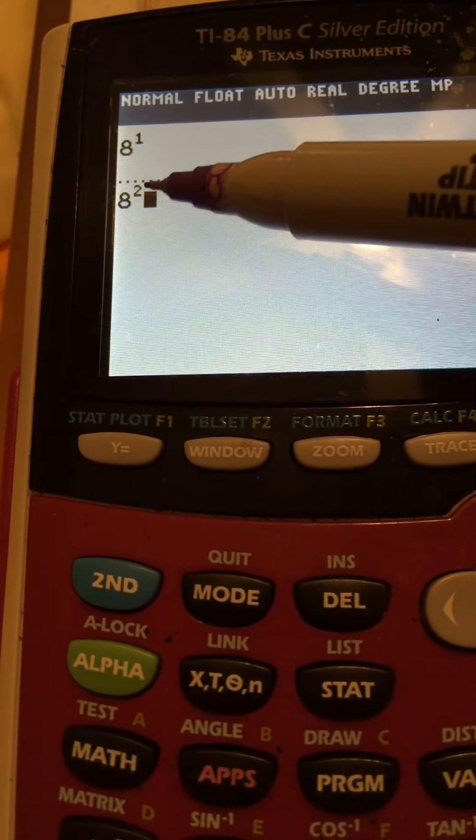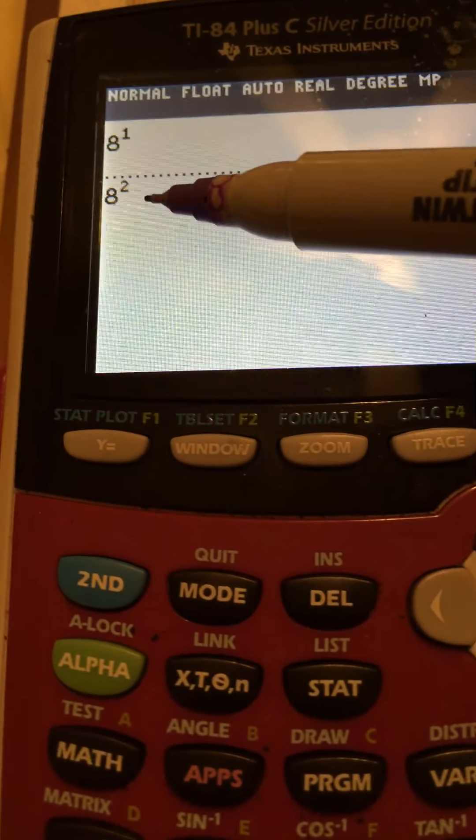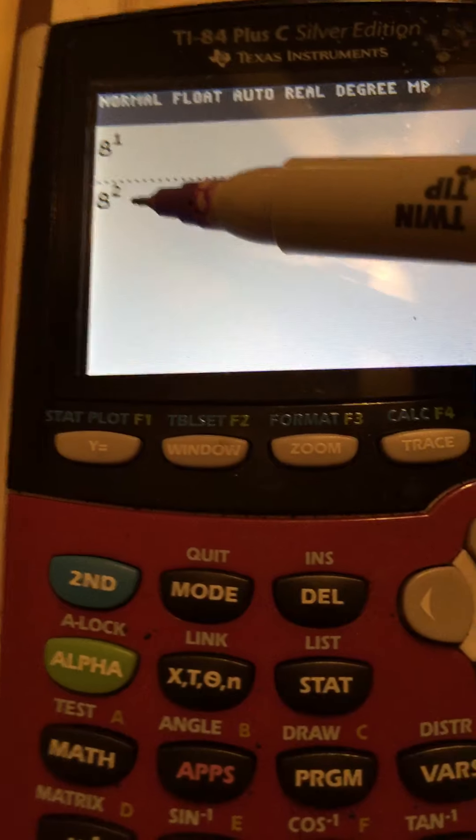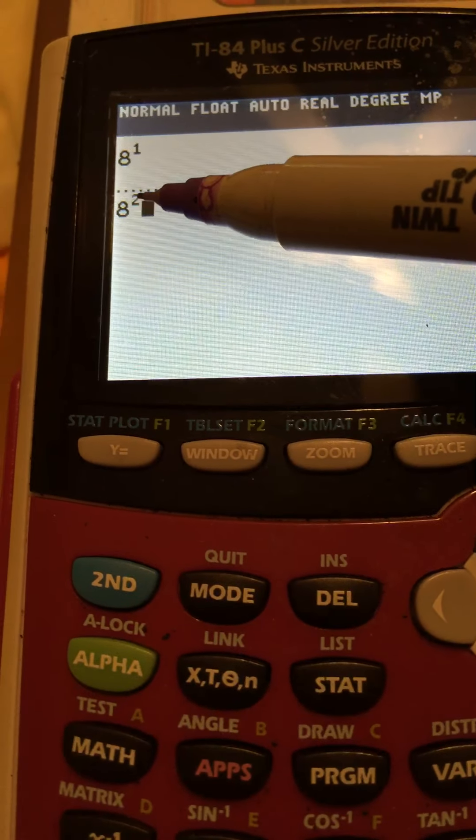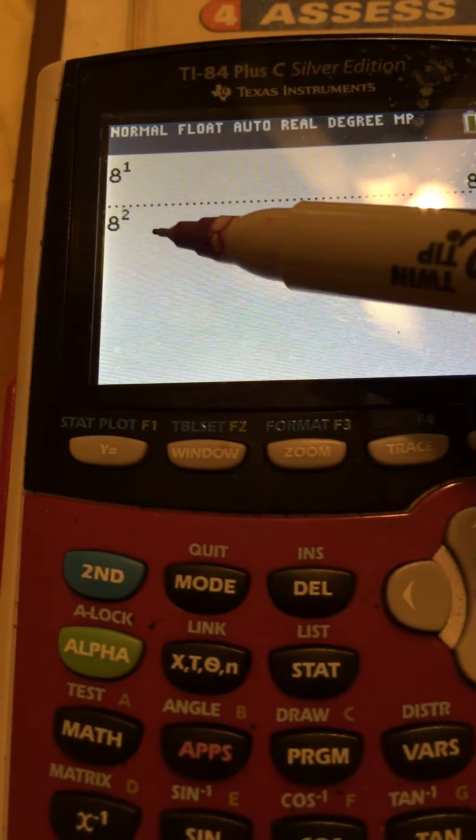If you use x squared, the cursor will go ahead and automatically go back down where you're ready to do more math. Otherwise, you have to use your arrow over keys to get back down to this level.